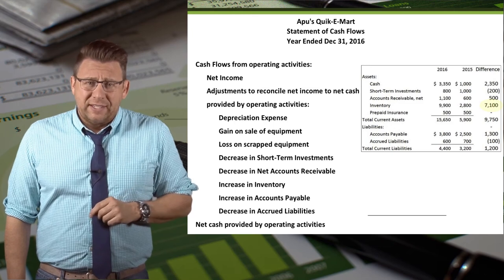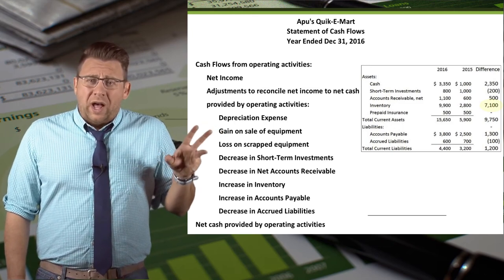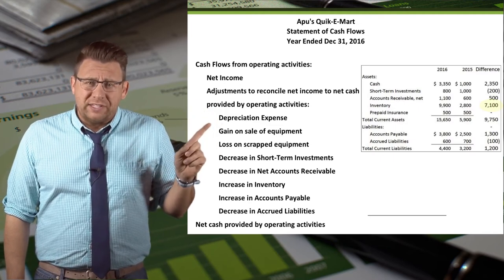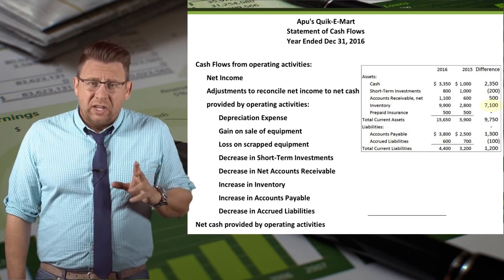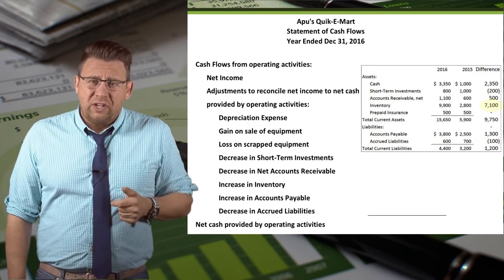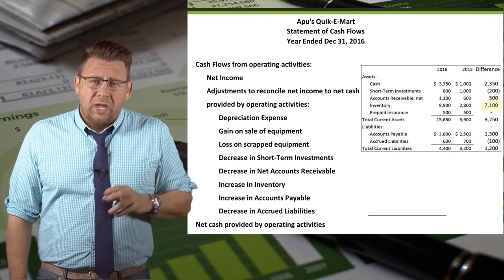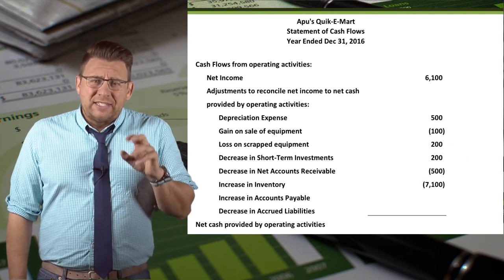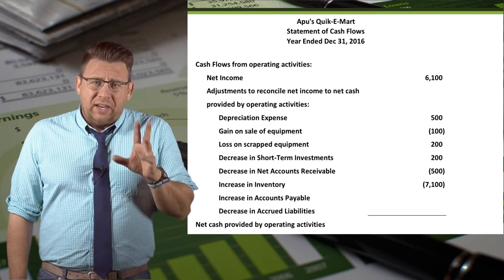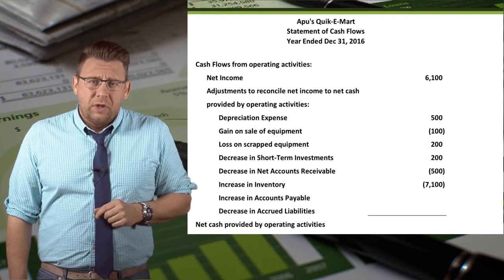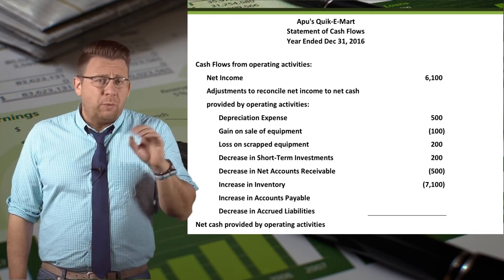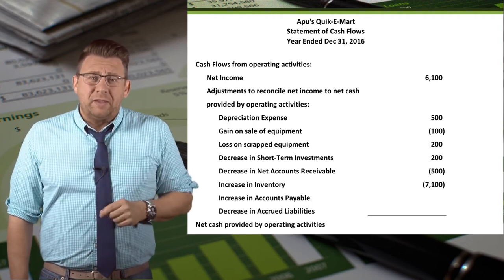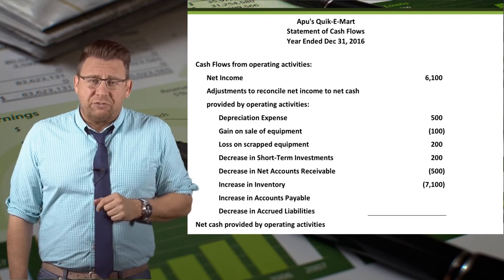Inventory is the next current asset and it increases quite a bit. Notice that prepaid insurance, the last current asset, had no change, so it doesn't help explain the change in cash and is left off the Adjustments section. Since we deduct increases in current assets, $7,100 is deducted in the Adjustments section for inventory. For a more detailed explanation, please see the video called Adjustments to Cash Flows Current Assets.